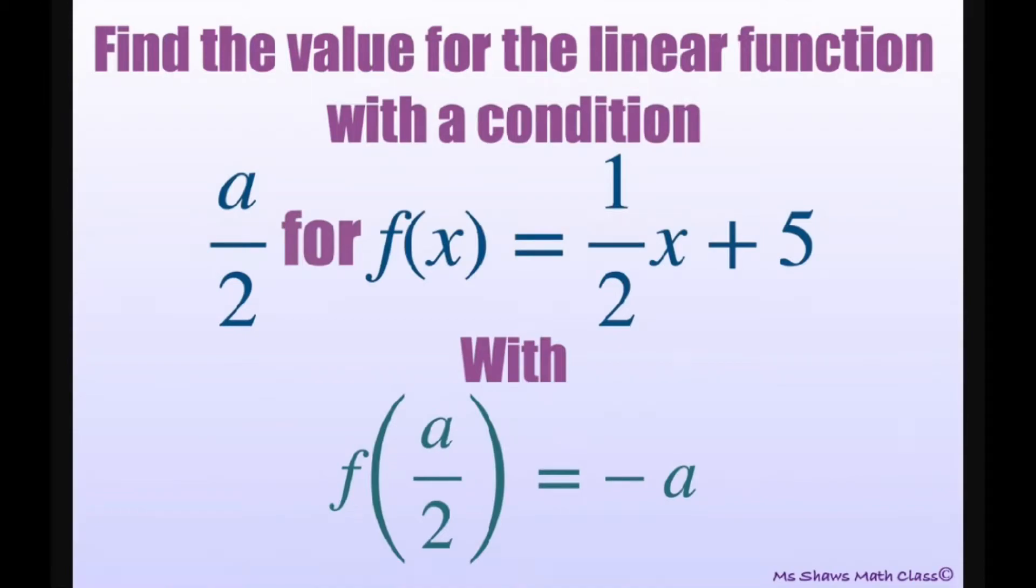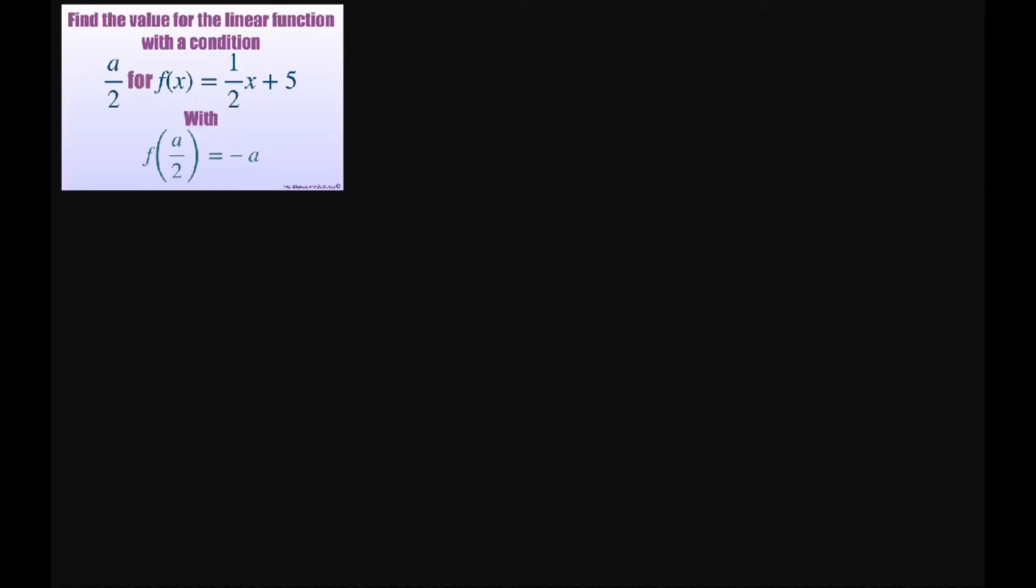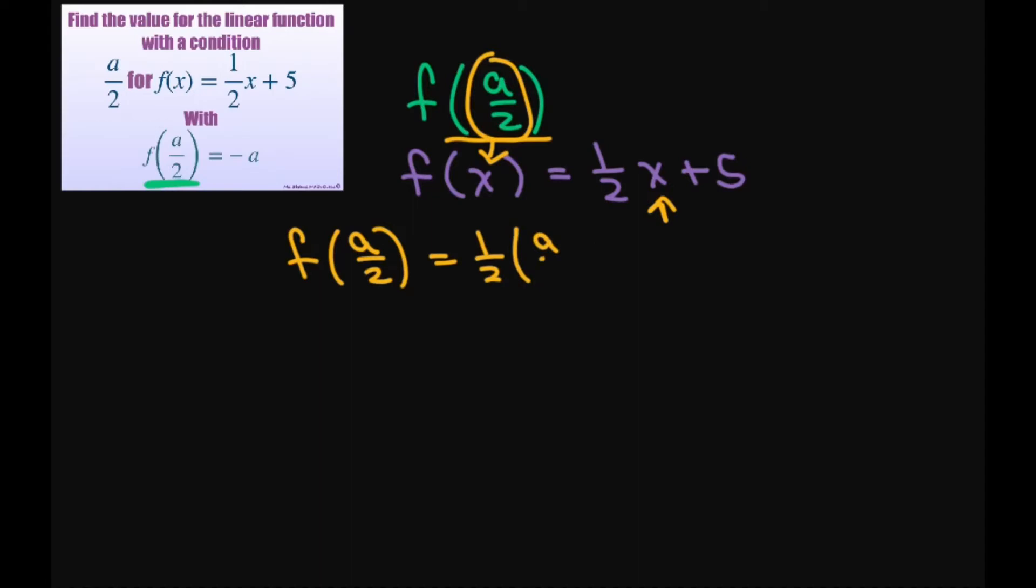So basically let's see what we can do with this. If we look at f of a divided by 2, and this is your f of x, and this is what you're looking for. What you're going to do is substitute everywhere there's the x. You're going to substitute in a divided by 2. So we're going to get f of a divided by 2 equals 1 half times a divided by 2 plus 5.